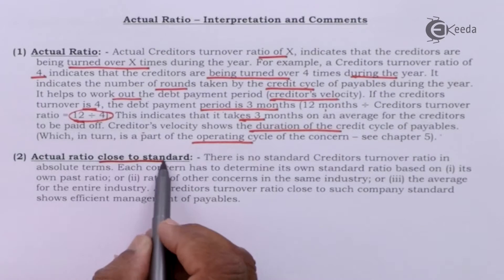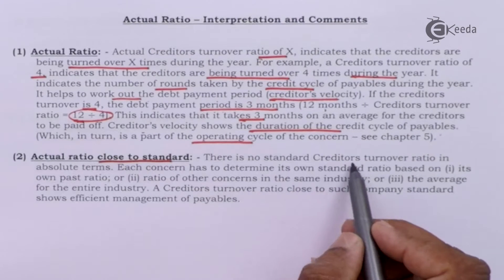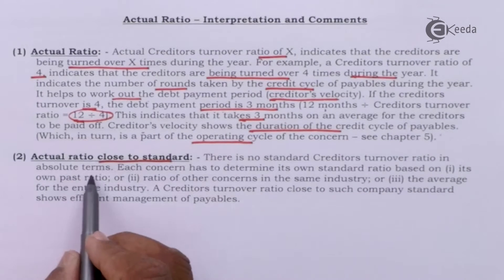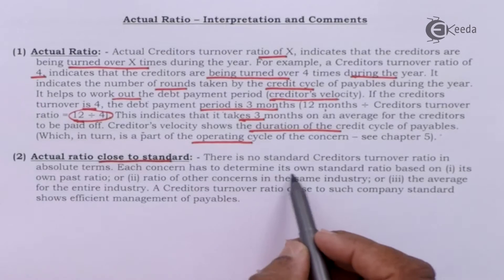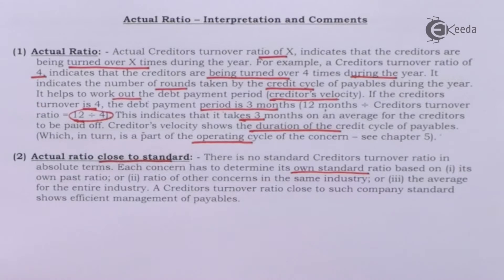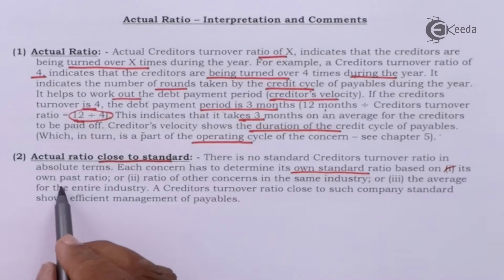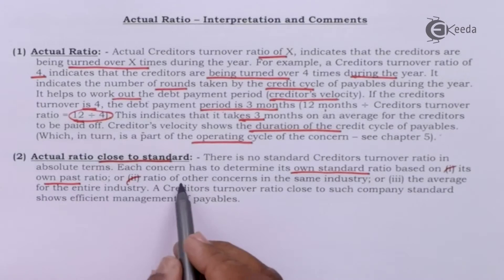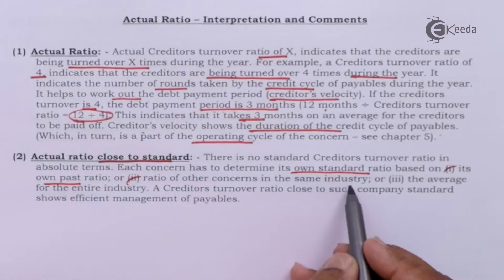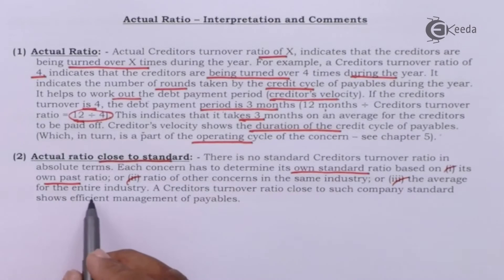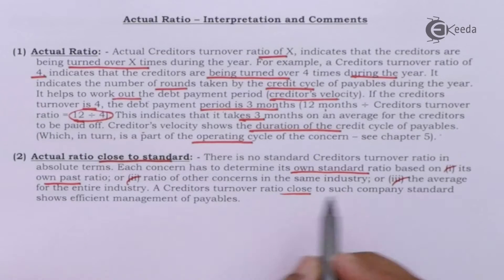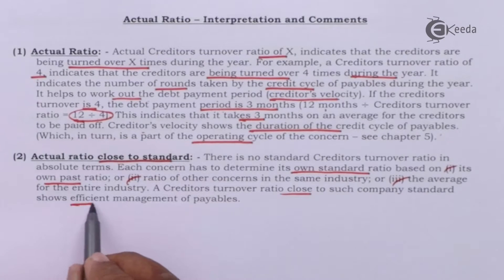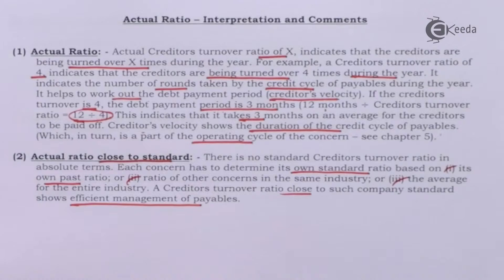There is no standard creditors turnover ratio in absolute terms. Each concern has to determine its own standard ratio based on its own past ratio, the ratio of other concerns in the same industry, and the average for the entire industry. A creditors turnover ratio close to the company standard shows efficient management of payables.